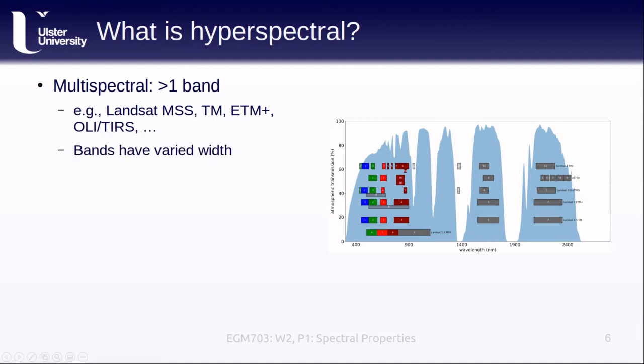One characteristic of most multispectral systems is that the bands have a varied width. If we looked at the band widths on this plot here, we see that they aren't all the same size. Not only that, but they also aren't continuous. There are gaps between successive bands where the sensor doesn't actually record data.